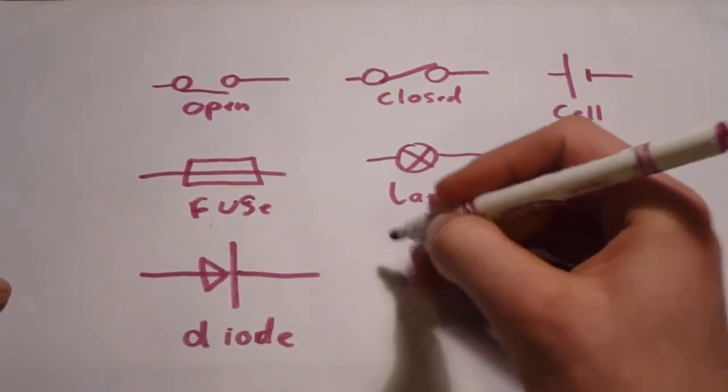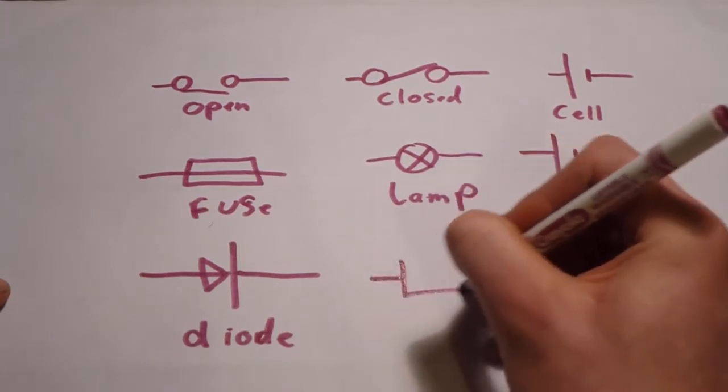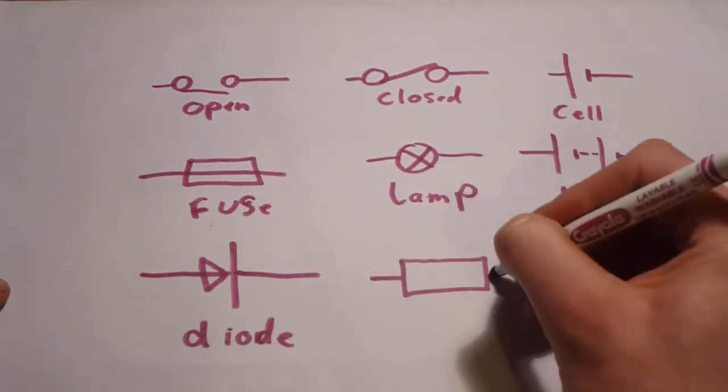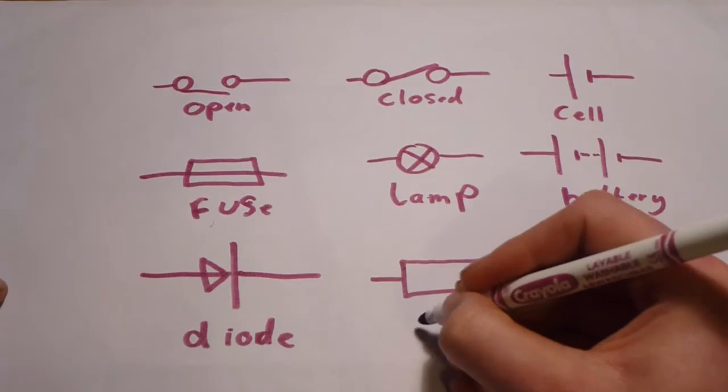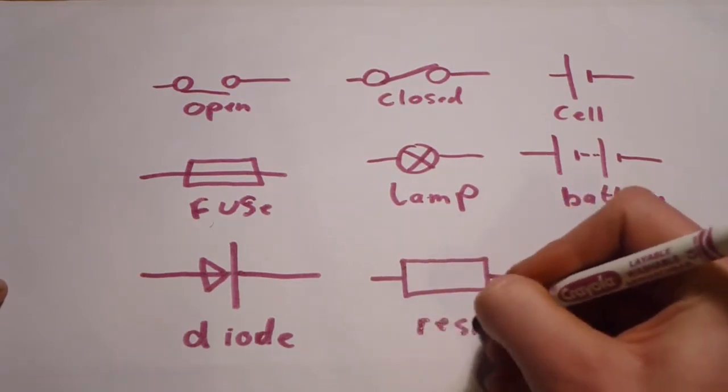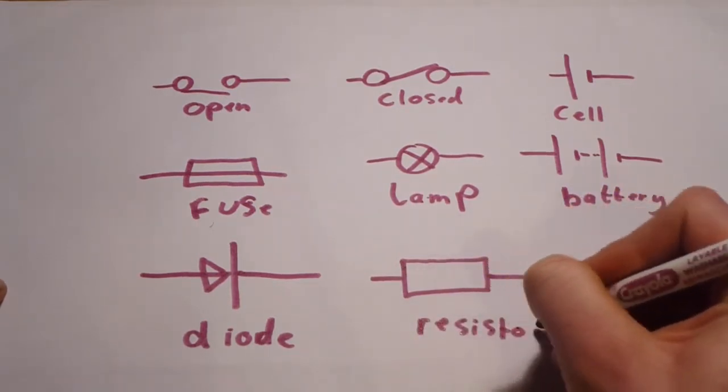After the diode, we have a resistor. It's drawn very similar to a fuse, but does not have the wire going all the way through it.